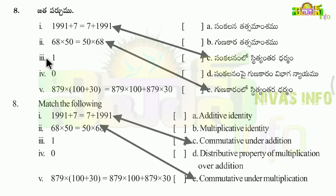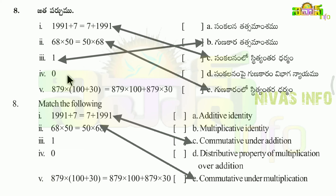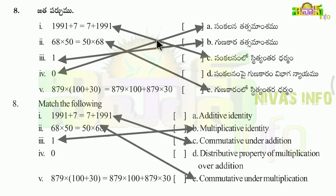Third match: Multiplicative Identity — the number 1. Fourth match: Additive Identity — the number 0.